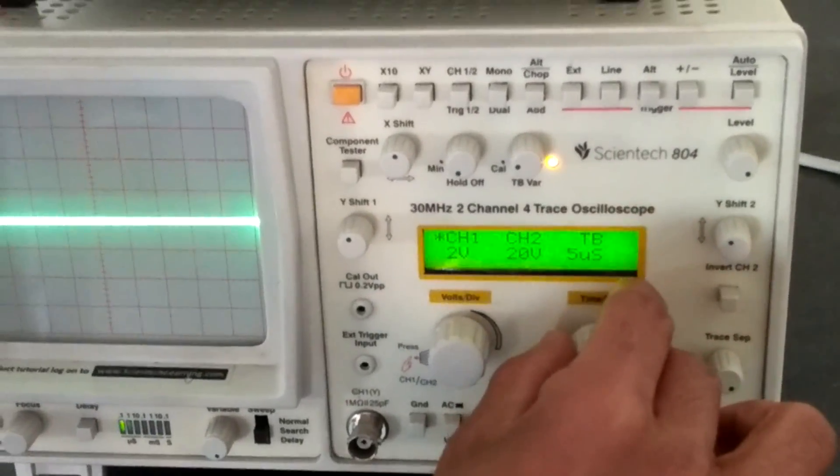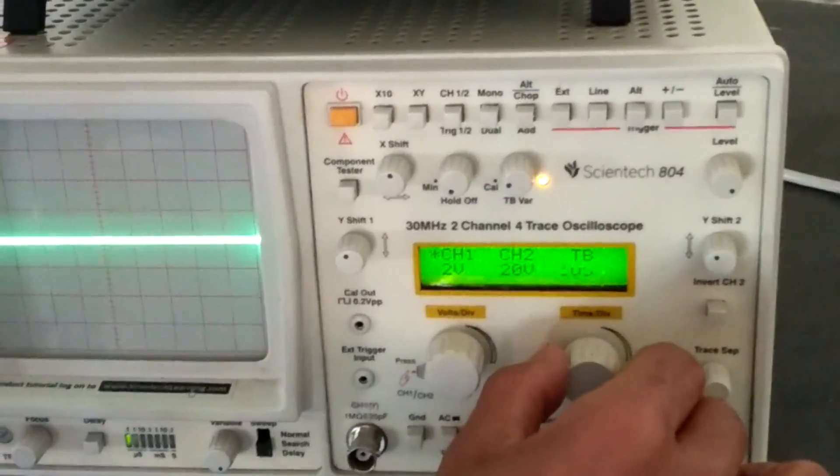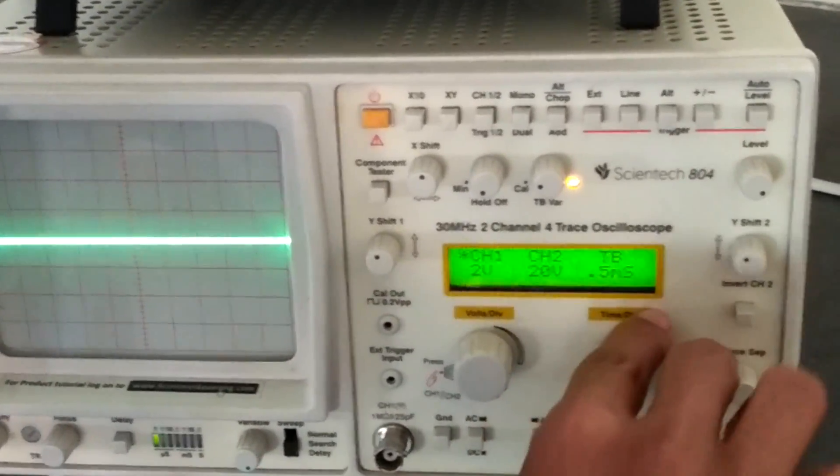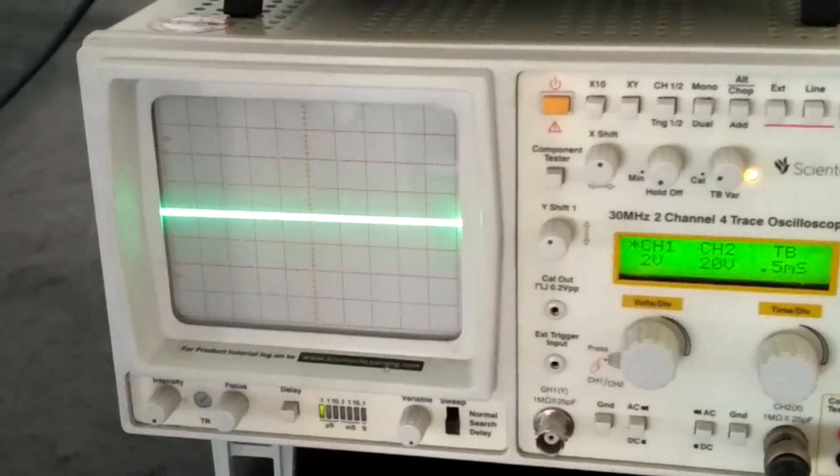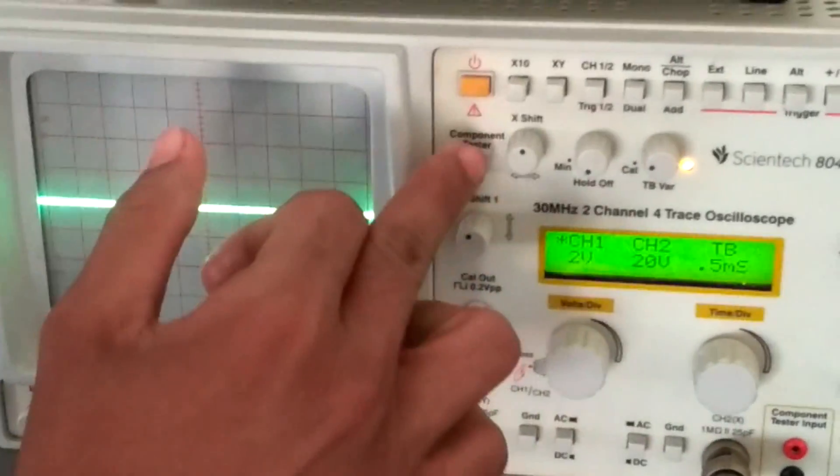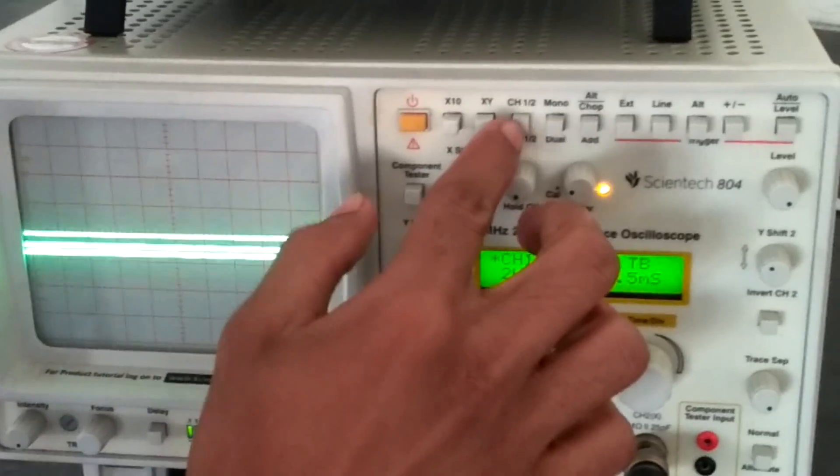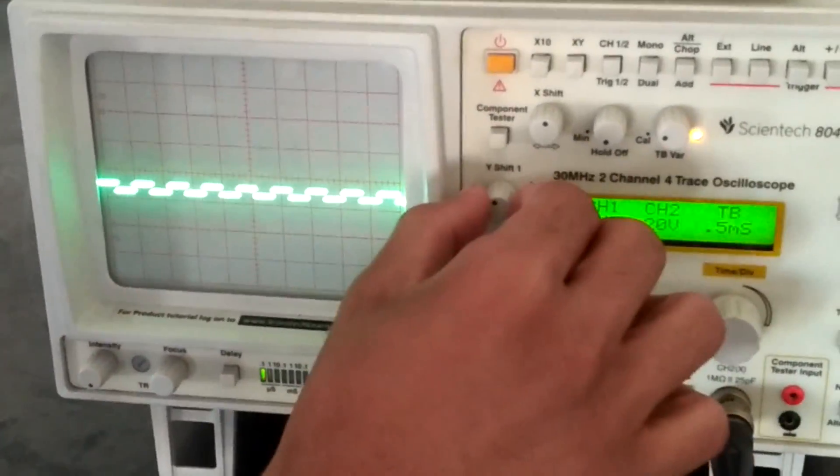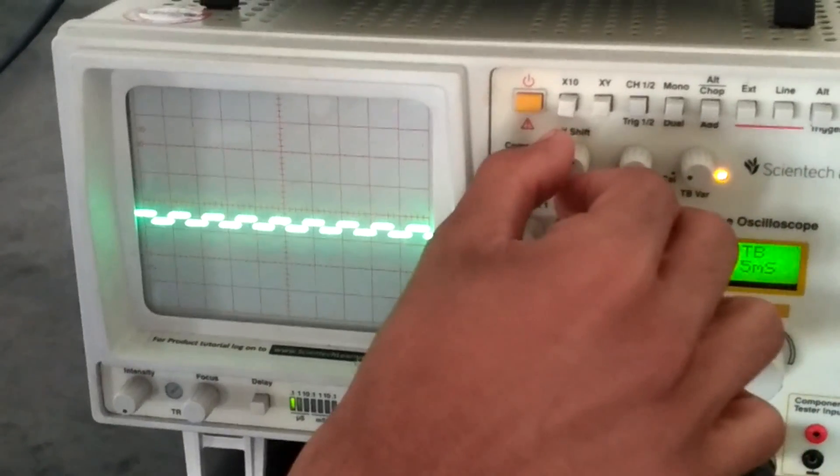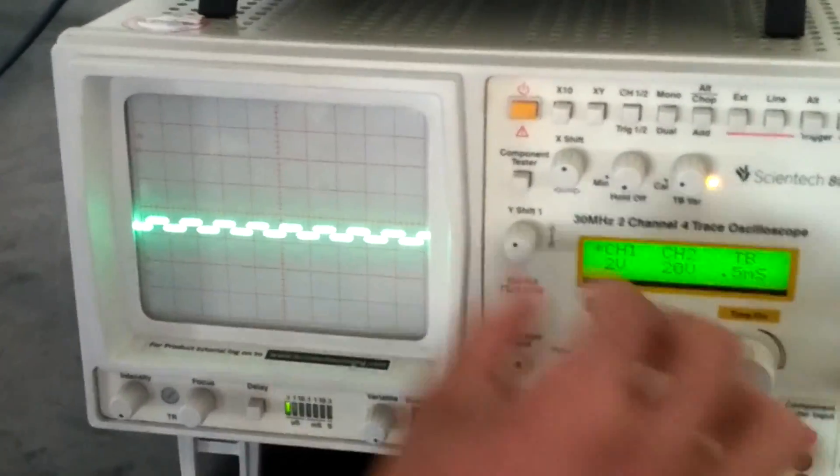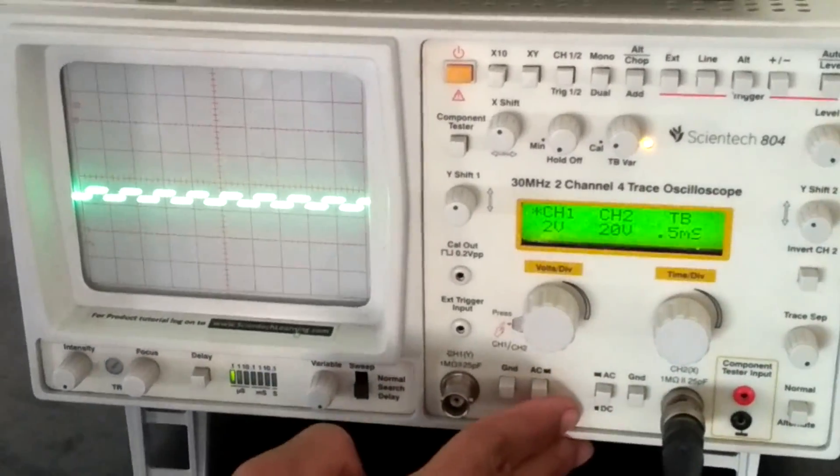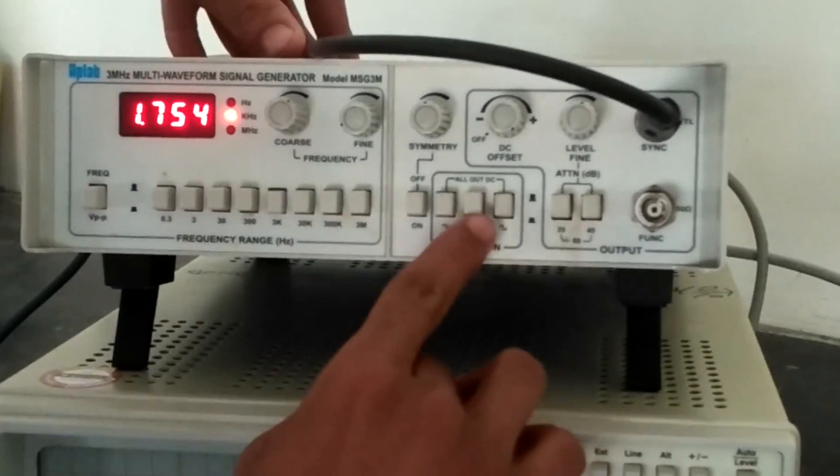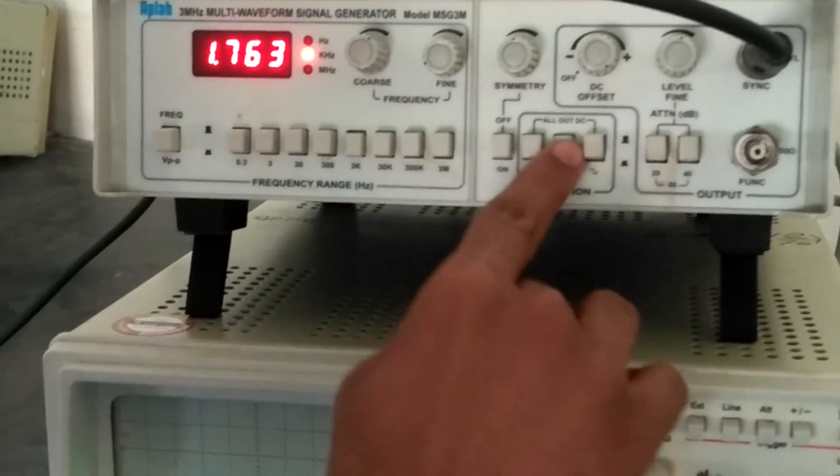And this time per division, for each division we have the time period of 20 microseconds. We can change it accordingly to 5 milliseconds. Now we have to select channel 1. We can give a square waveform or we can give a triangle waveform as well.